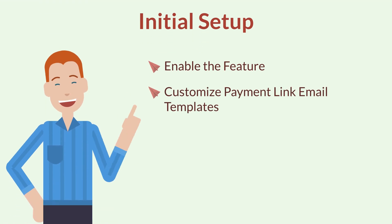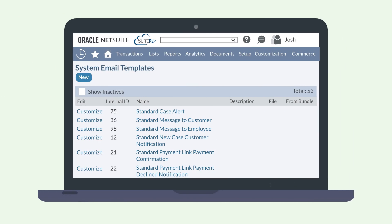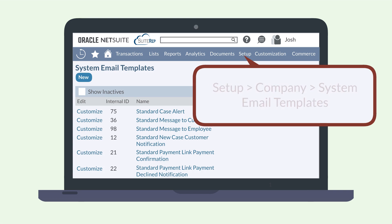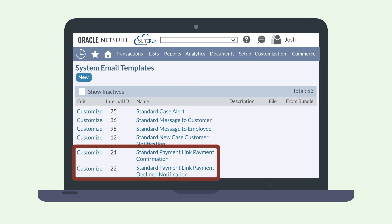The payment link feature includes two system-generated email templates: an email to confirm the payment and an email to decline the payment. You can adjust these templates to use your preferred name, wording, and subject lines. To edit these email templates, navigate to Setup > Company > System Email Templates, and use the customize link next to both the standard payment link payment confirmation email template as well as the standard payment link payment declined notification email template.